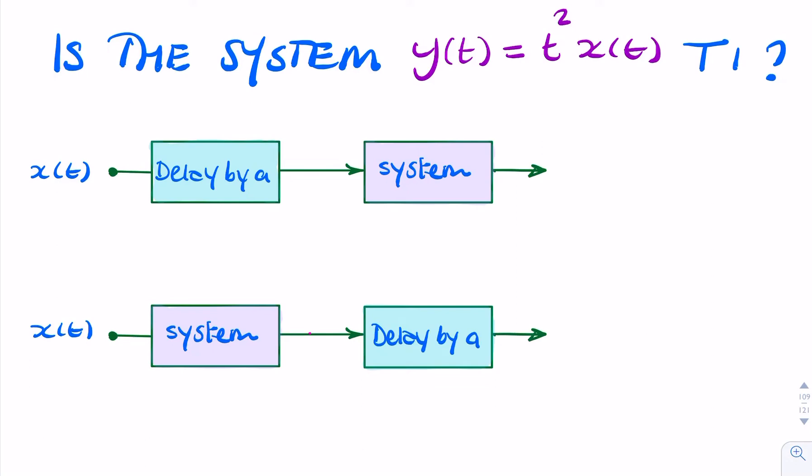In this example, we have a continuous time system, y of t equals t squared x of t. And we're asked to check if it's a time invariant system.